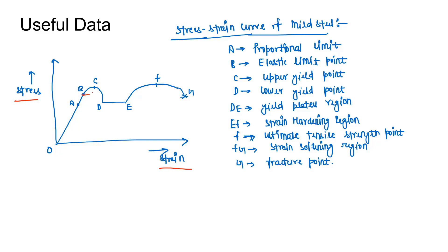Point B is the elastic limit, because up to this point if we remove the load the material regains its original shape. Point C is the upper yield point, as this is the load at which the material starts yielding. Point D is the lower yield point. The region D to E is the yield plateau region, where there is no significant change in stress but the strain continues to increase.